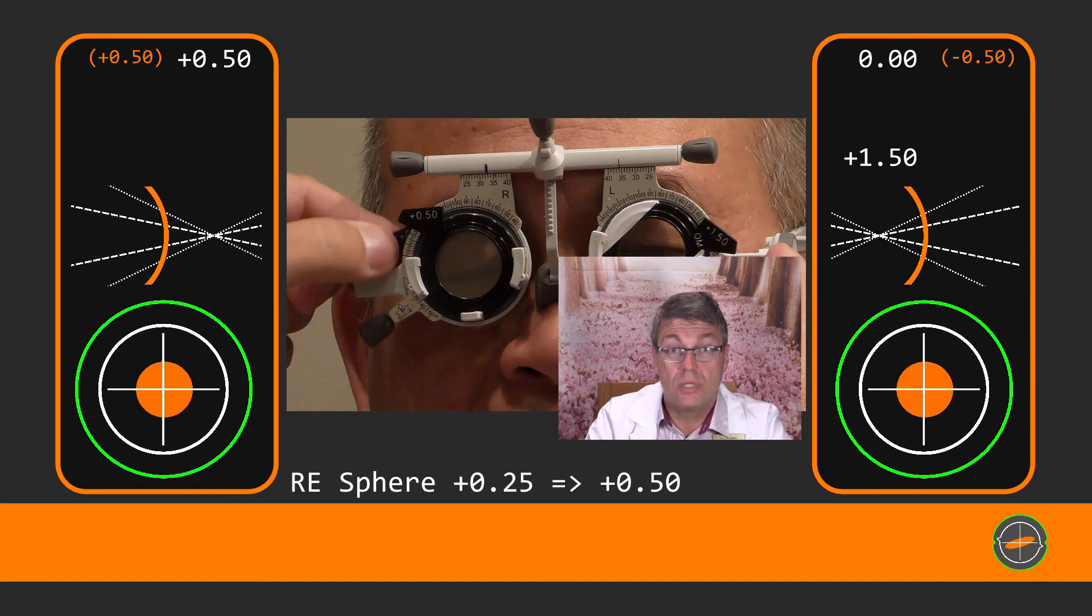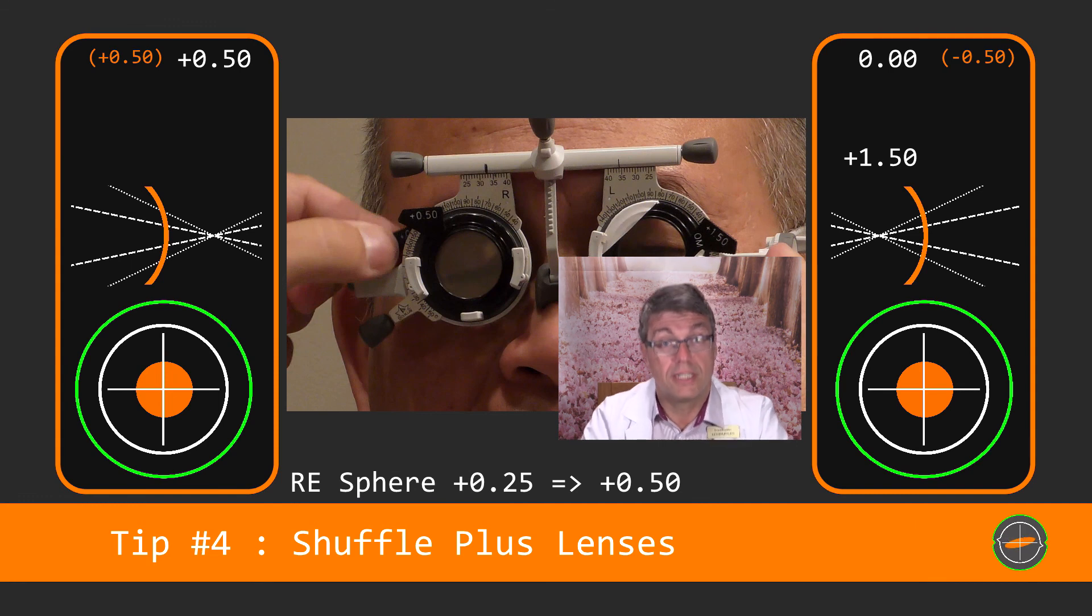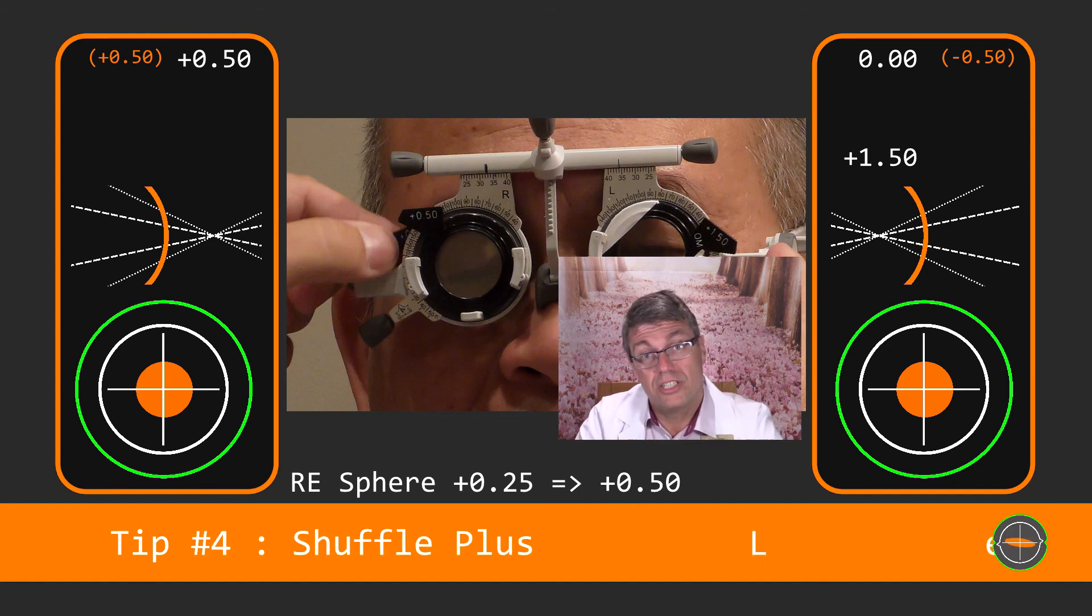This is an important technique with plus lenses. Always put the new lens in before taking the old lens out. This stops the patient accommodating when you change the lenses. This is only done with the plus lenses. Definitely not the minus lenses as you'll see later. I like to call this technique lens shuffling.